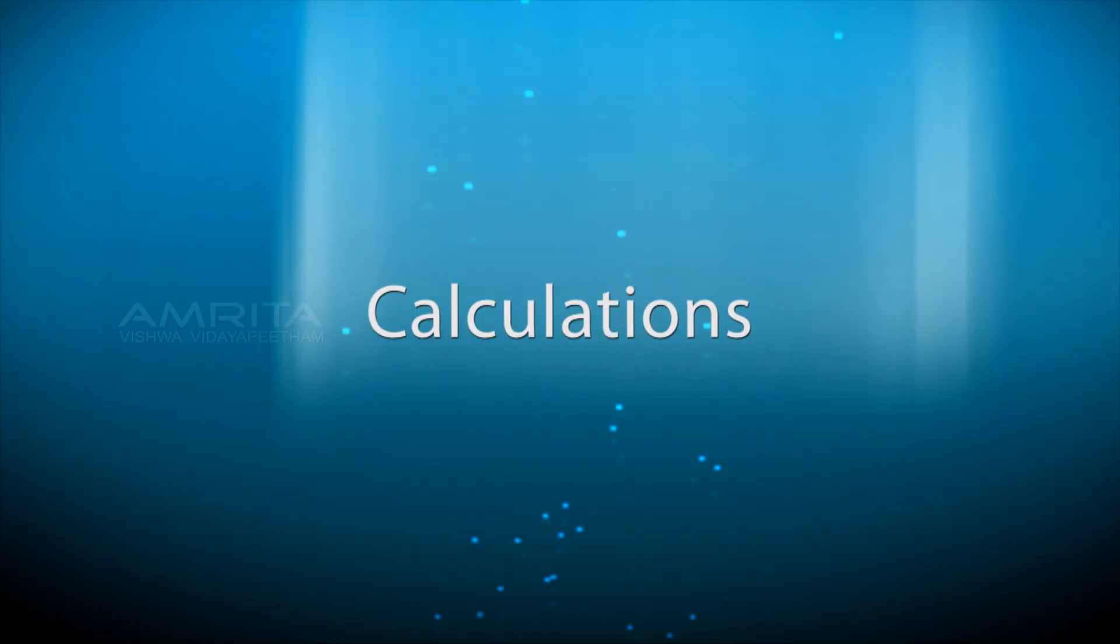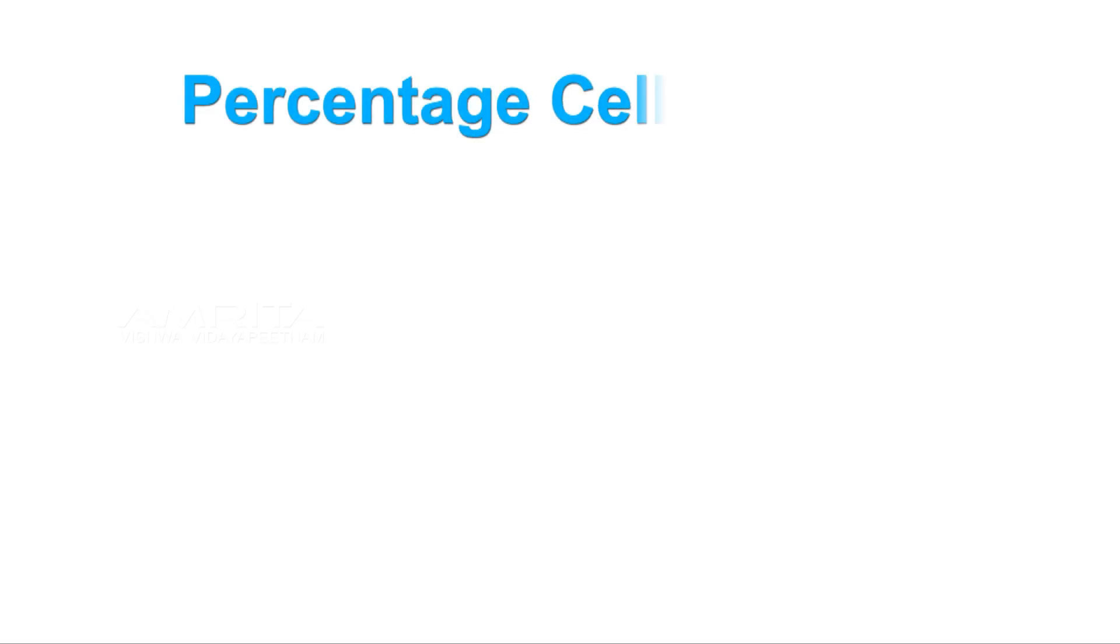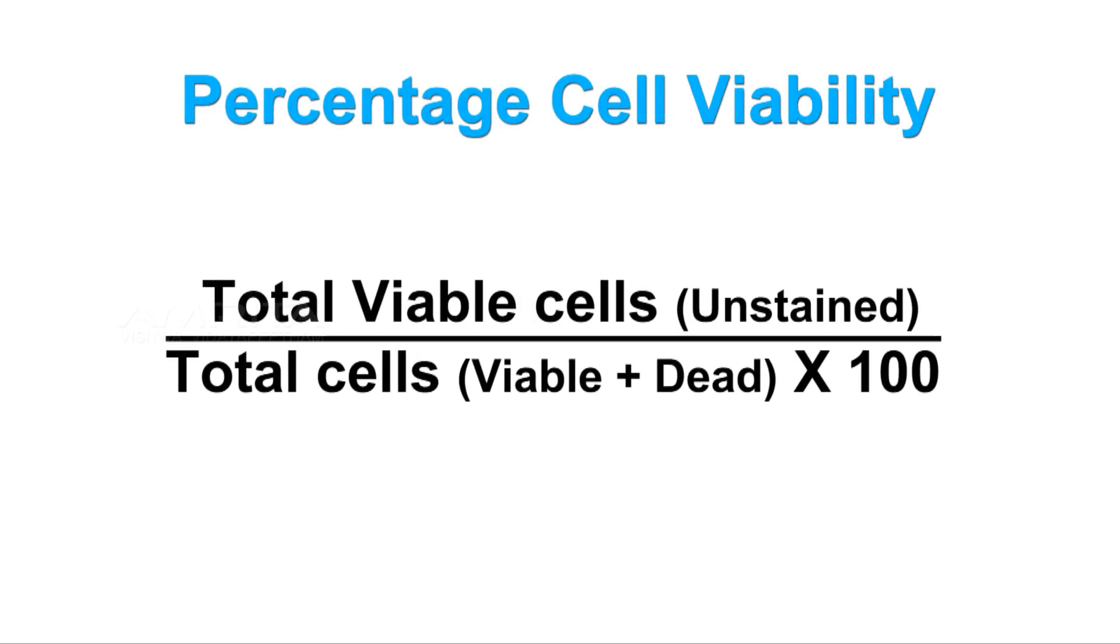Now the calculations. The percentage of cell viability can be calculated using the formula: total viable cells (unstained) divided by total cells (viable and dead) times 100.